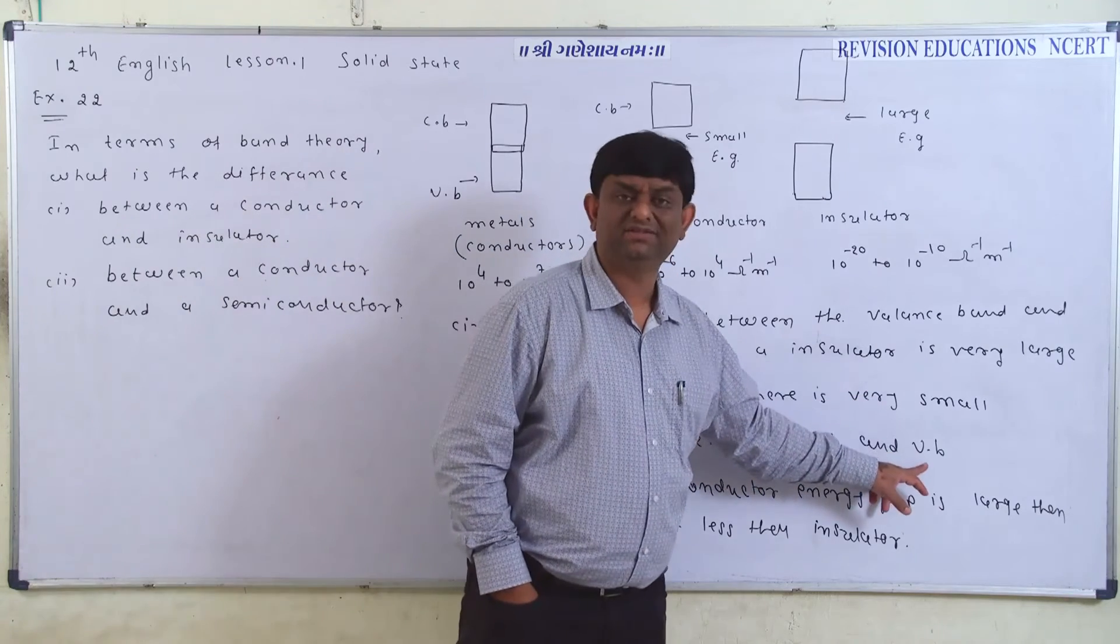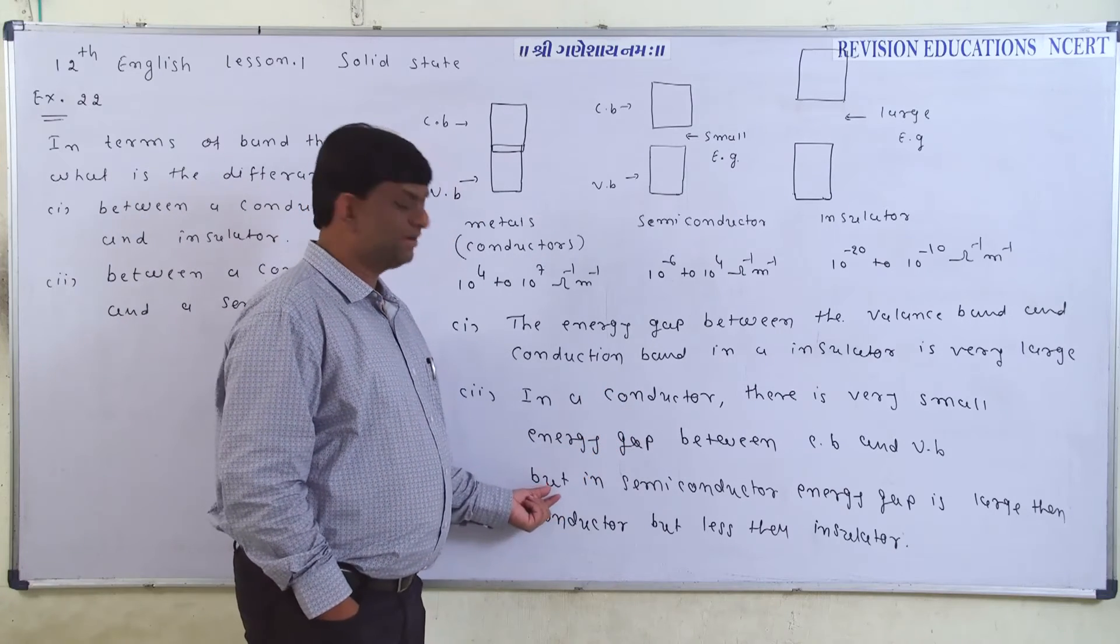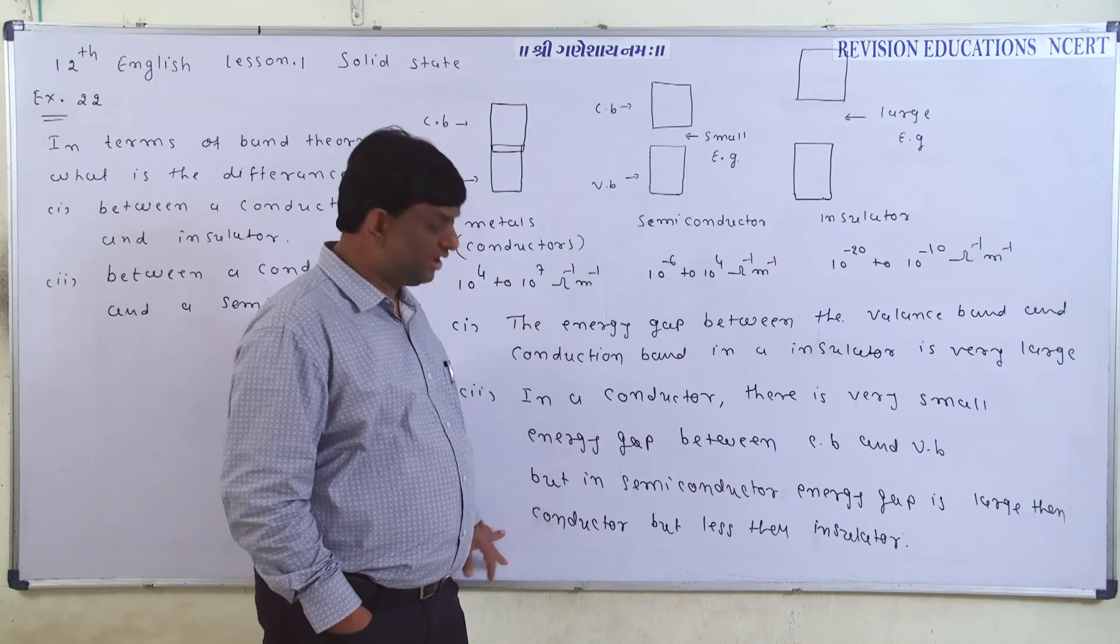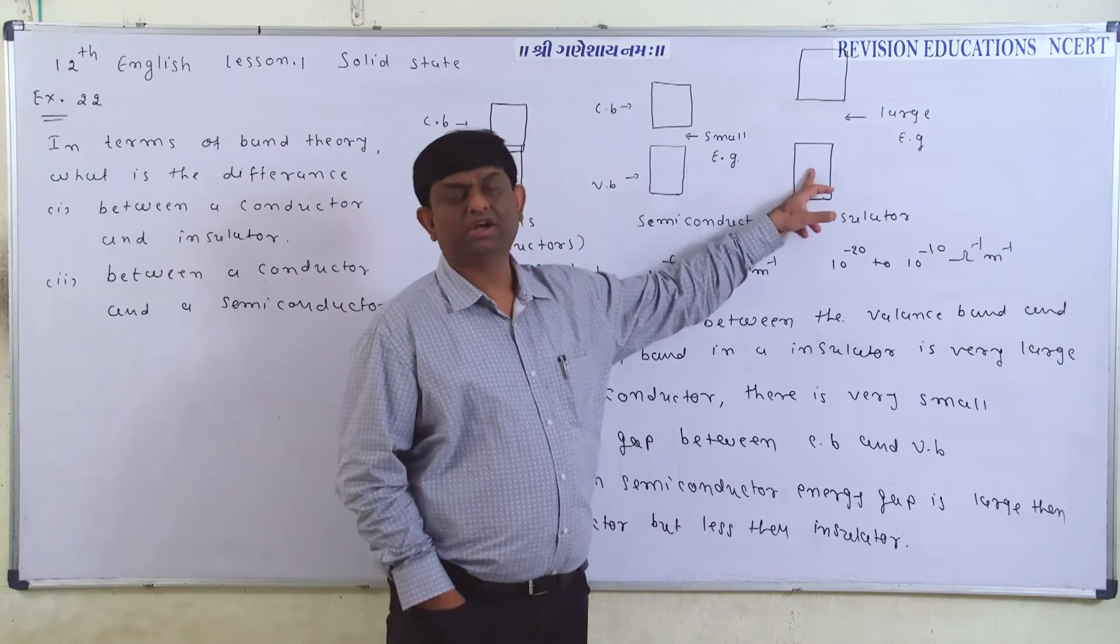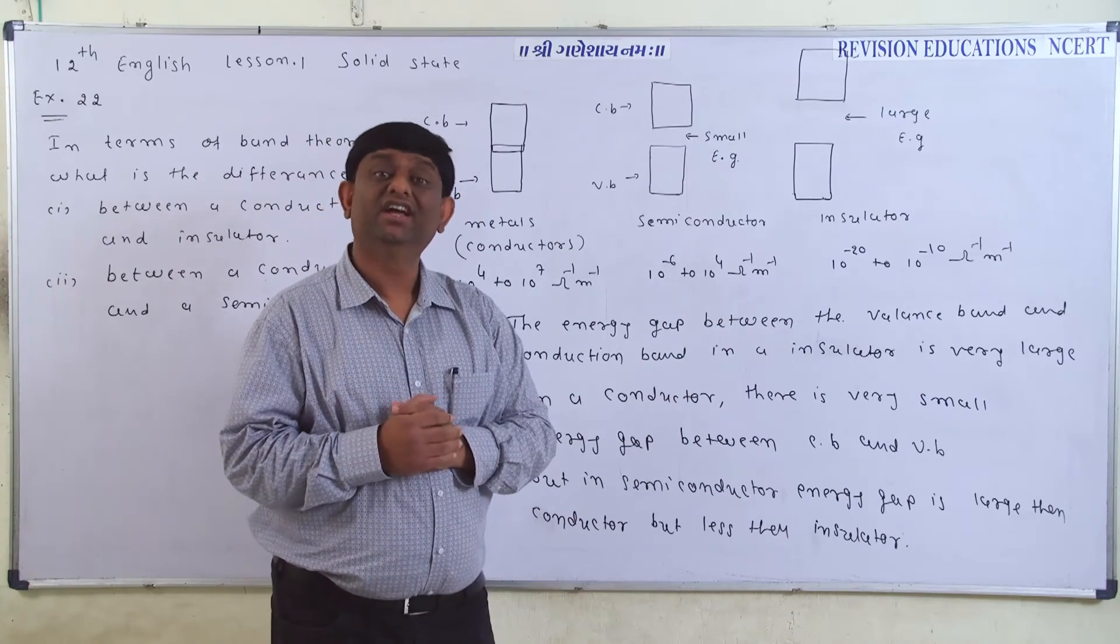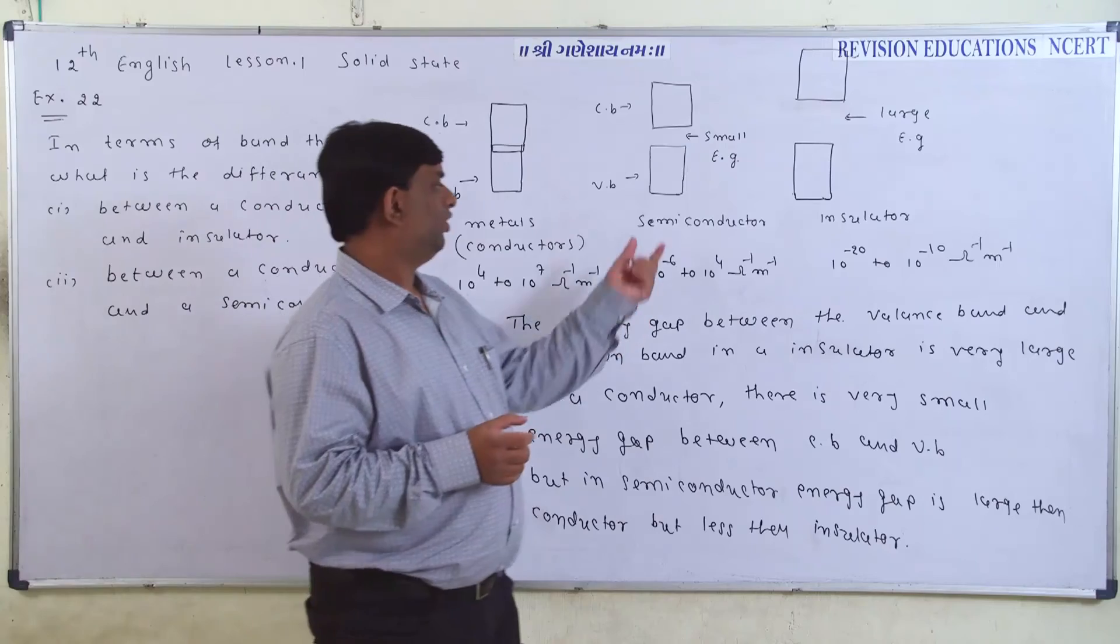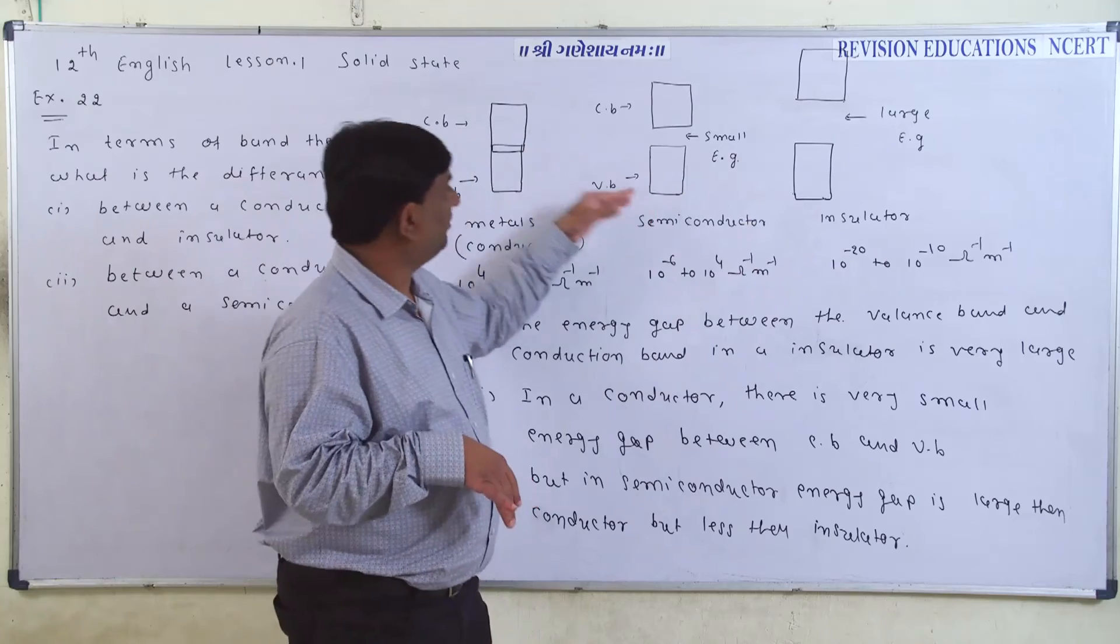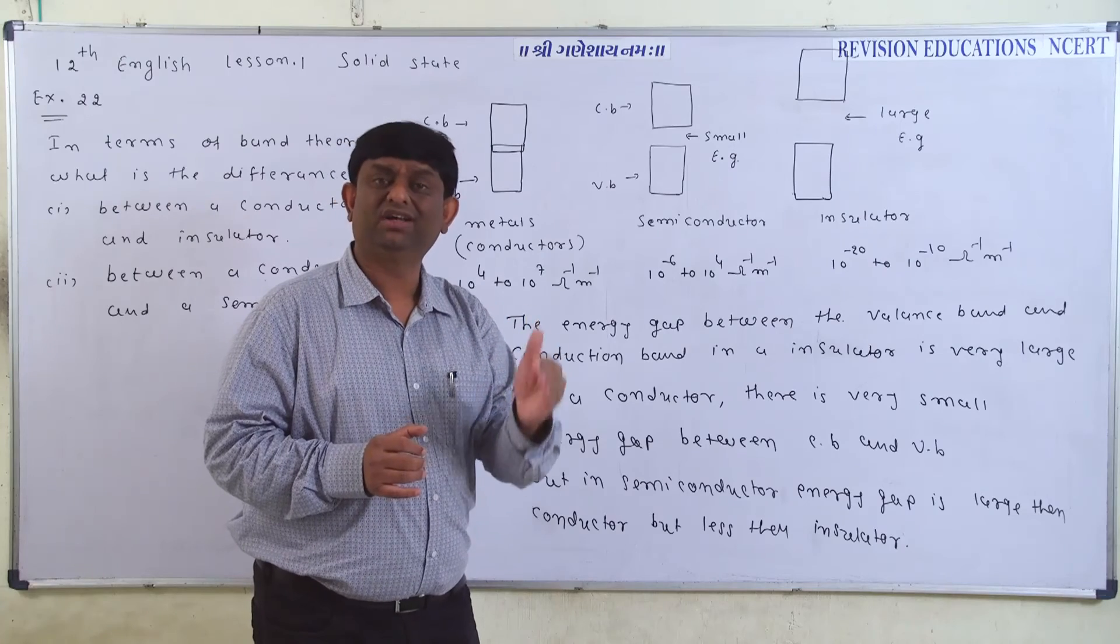CB means conductance and VB means valence. The energy gap is very low, but in semi-conductor, the energy gap is larger than conductor and smaller than insulator. The insulator doesn't show electrical conductors in any temperature. Metals in any temperature show electrical conductors and semi-conductors are in low temperatures. But in high temperatures, there are conductors.